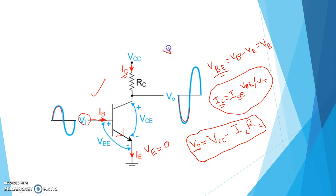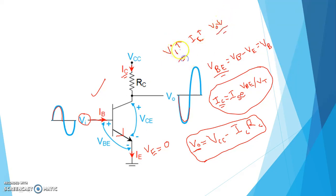So from this analysis, if VI increases then collector current IC increases, and then V_output decreases. Similarly, with decrease in VI, V_output increases. This means there is a 180 degree phase shift: when VI increases, V_output decreases, and when VI decreases, V_output increases.